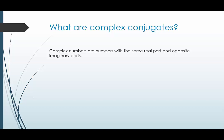So first, what are complex conjugates? Complex conjugates are numbers with the same real part and opposite imaginary parts. Let's talk about what that means.